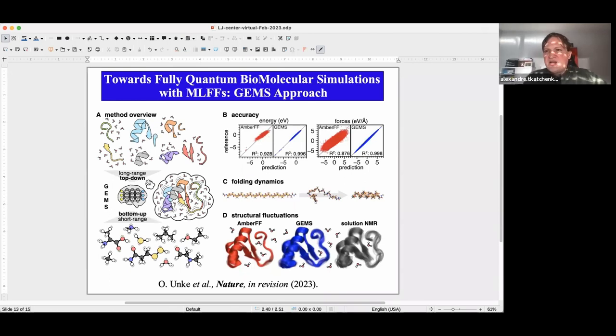And then we combine this information. And this is, we call the GEMS approach for general molecular simulations. So then we feed in this data to a SpookyNet architecture. And here you can see the reference data, by the way, is computed at the PBE0 plus MBD, many-body dispersion, PBE0 plus MBD accuracy. And we have about four to five million structures in total.